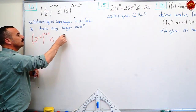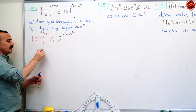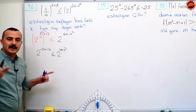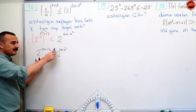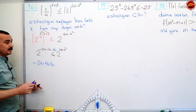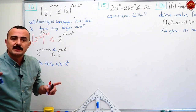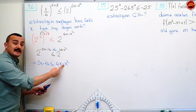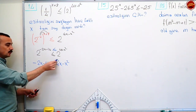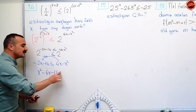Üstün üstü özelliğini kullan. Eksi ikiyi dağıtacaksın. Oluyor: iki üzeri eksi iki x eksi on altı küçük veya eşittir iki üzeri dört x eksi x kare. Taban bileşikse arada nasıl işaret varsa aynısını üstler arasına koy. Yani eksi iki x eksi on altı küçük veya eşittir dört x eksi x kare. Eşitsizliklerde bir tarafı sıfır yapman lazım. x karenin işaretini artı yapmak için bu tarafa at. Eksi x kare bu tarafa artı x kare diye geldi. Artı dört x bu tarafa eksi dört x diye geldi. Eksi iki x de burada, eksi altı x yaptı. Bir de eksi on altı var.